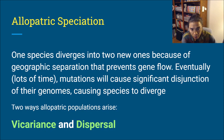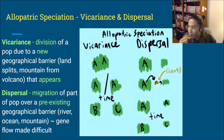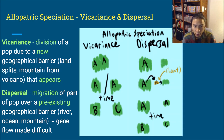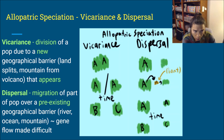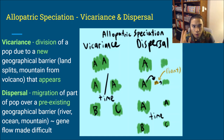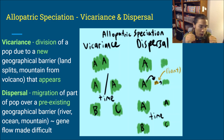There are two ways allopatric populations arise: vicariance and dispersal. Vicariance is where the division is due to a new geographical barrier that pops up — for example, a landmass splitting in half creating ocean between the two parts, or a mountain popping up due to an earthquake raising the plates, creating a separation between two subpopulations. It could also be a volcano erupting and creating a new barrier.